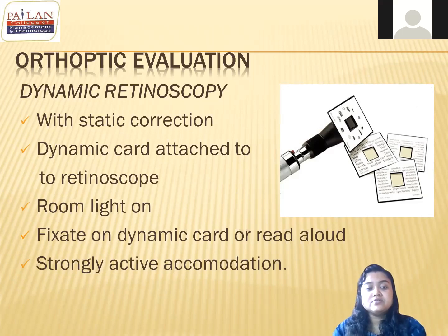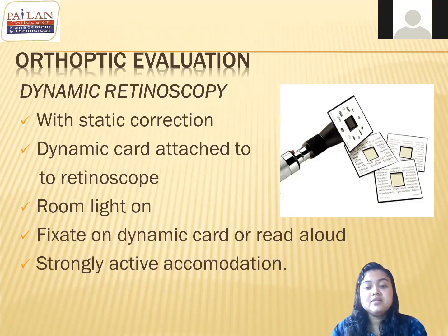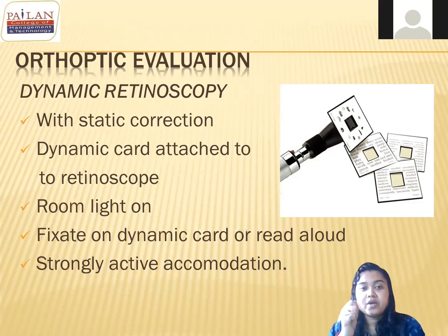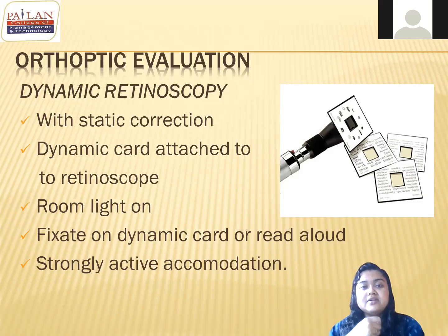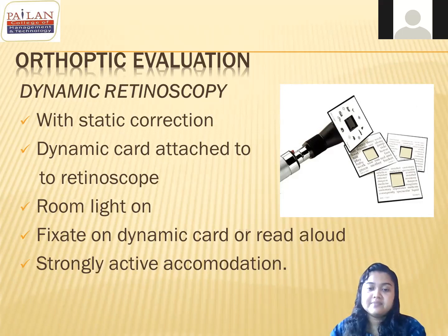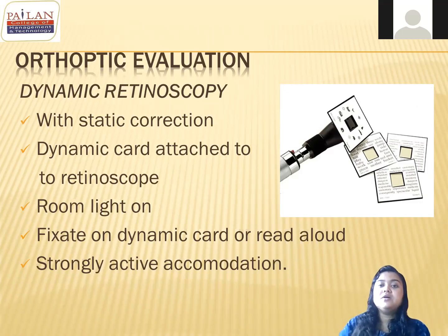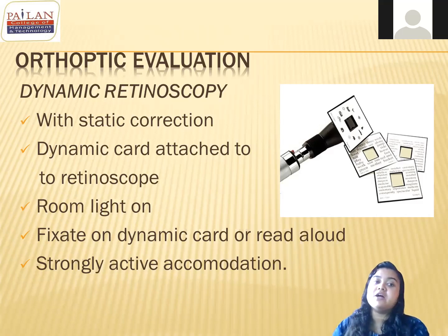Attach the dynamic card to the retinoscope, put the near light on, and tell the patient to fix and read aloud. Quickly perform the retinoscopy with a flash in the horizontal direction, keeping the streak vertical. If you see a 'with' movement, neutralize it quickly. Normally we get a 'with' movement neutralized by +0.5 to +0.75 diopter — that is a normal dynamic retinoscopy value.